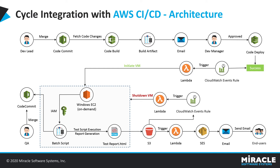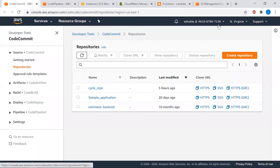The output will be a test_report.html file, which is dropped into an S3 bucket. Two events then take place: first, a Lambda function triggers automatically, picks up the file, and uses AWS SES (Simple Email Service) to send it as an email attachment to end users. Second, a CloudWatch event rule triggers a second Lambda function whose job is to shut down the Windows EC2 instance.